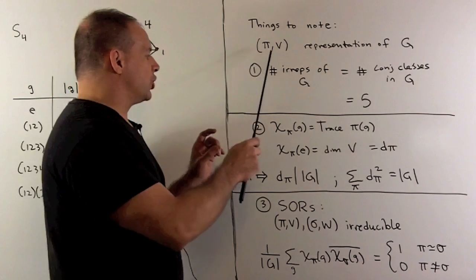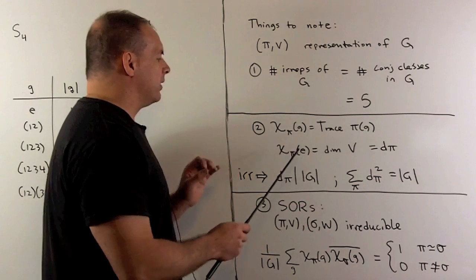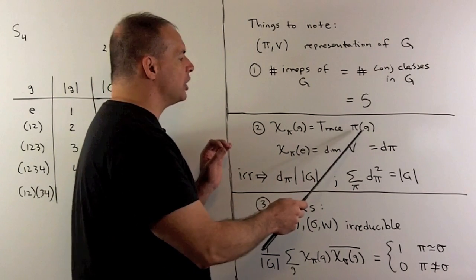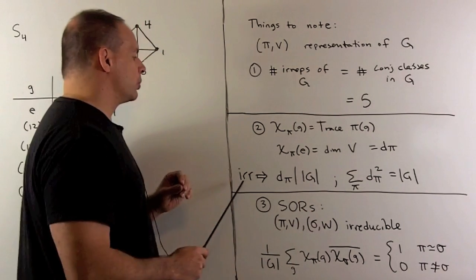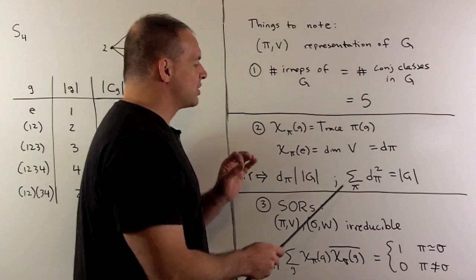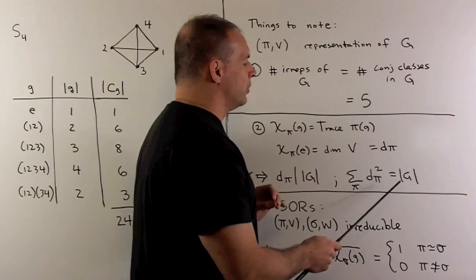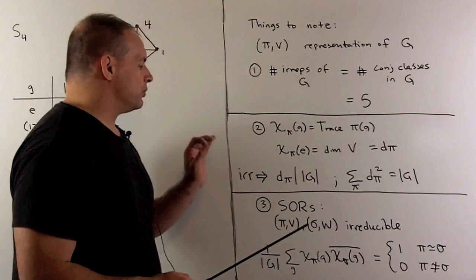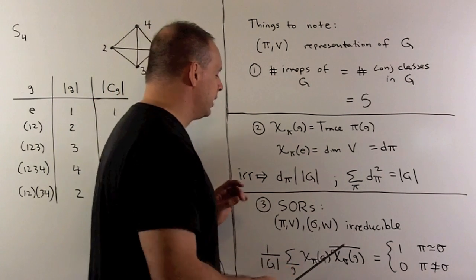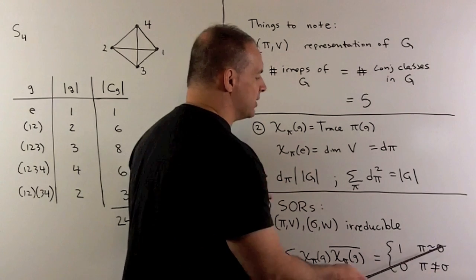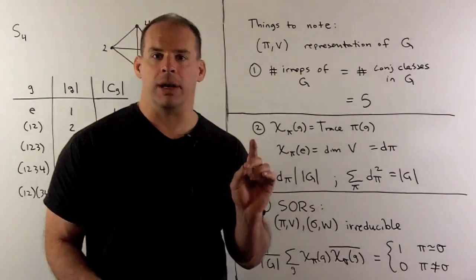For the character of our representation, we evaluate chi at g, given by the trace of pi of g. If we evaluate the identity, we're taking the trace of an identity transformation, which gives us the dimension of our vector space, called D sub pi. If pi is irreducible, then D sub pi divides the order of the group, and the sum of D pi squared over all inequivalent irreducible representations equals the order of the group. Finally, we have the Schur orthogonality relations for characters: if pi and sigma are irreducible representations, their inner product is one if they're equivalent and zero otherwise.